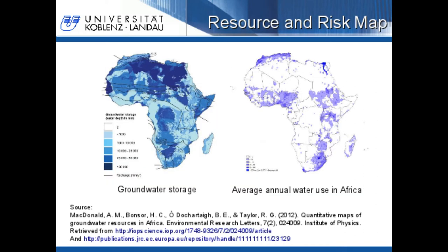A project with a 12th grade intensive mathematics course was performed. The task was to determine the quality of locations in Africa for building wells. Several risk and response maps were used. Combination of those maps was done with Fuzzy Logic and Convex combination. Two maps used in this project are shown on this sheet: on the left the groundwater storage of Africa and on the right the average annual water use in Africa.